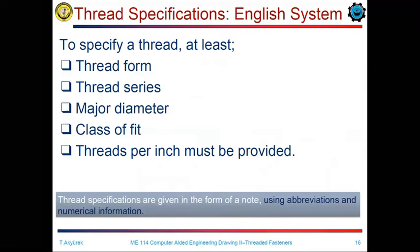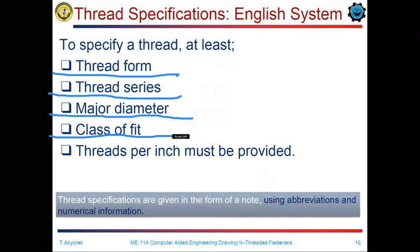To define a thread fastener, we have five parameters for imperial type fasteners: the thread form, the thread series, the major diameter, the class or fit for the tolerance standard, and also the threads per inch must be given in the definition.